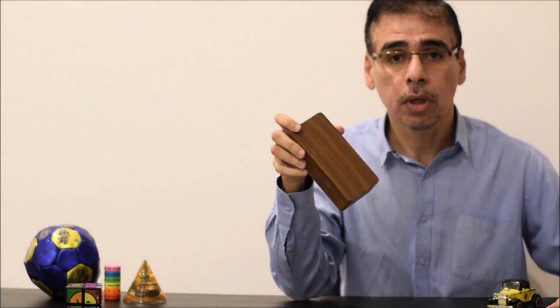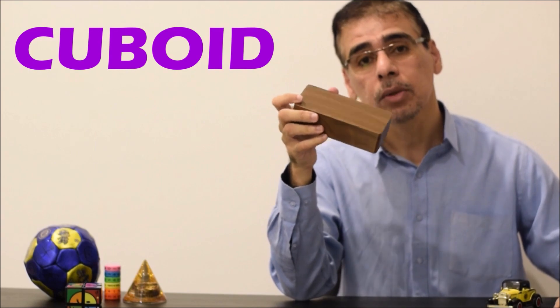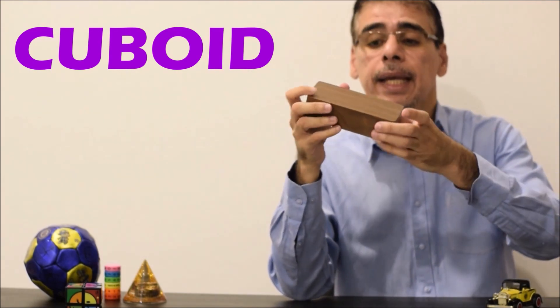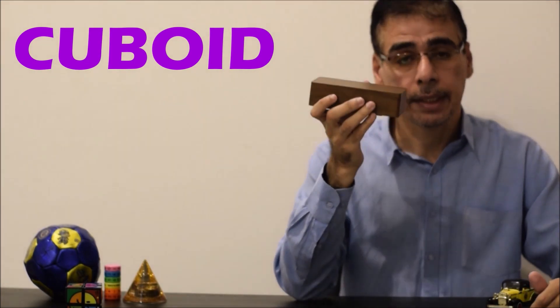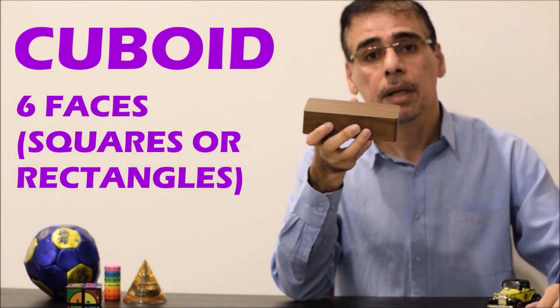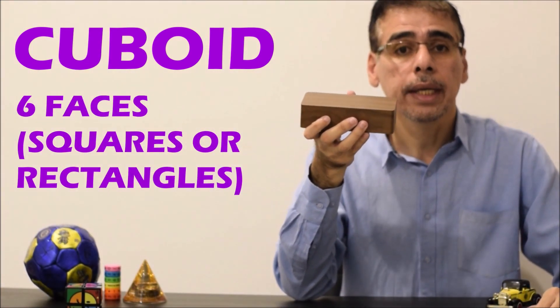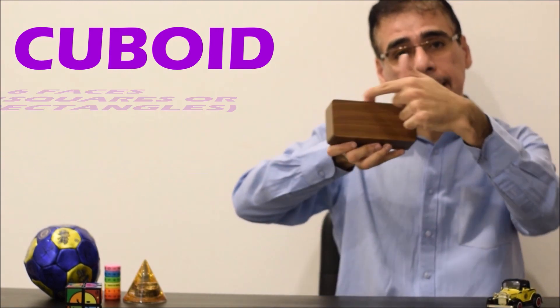The second shape is called the cuboid. The cuboid looks like the cube, but it has different side length. As you can see, it has also 6 faces, but the faces look like square or rectangles.